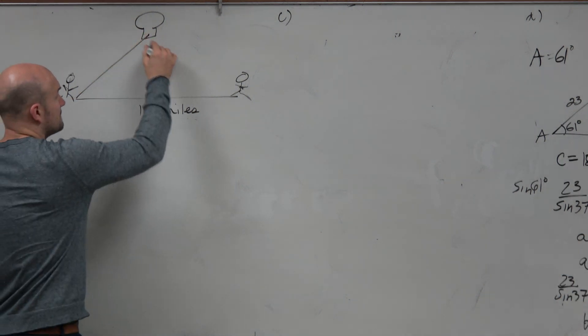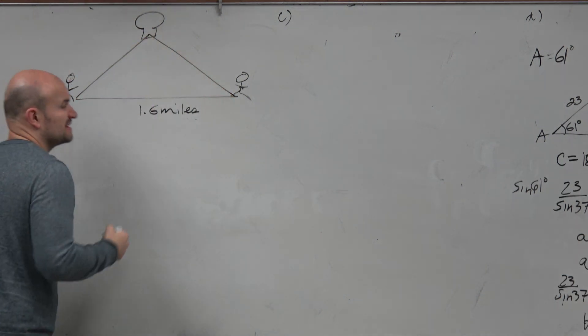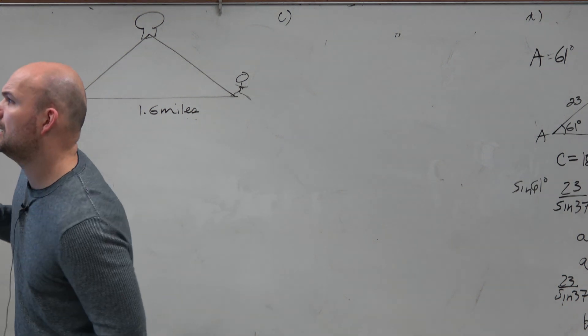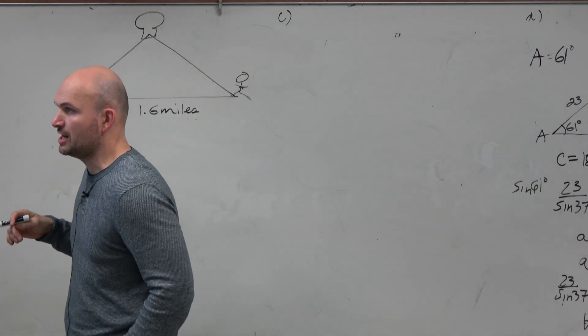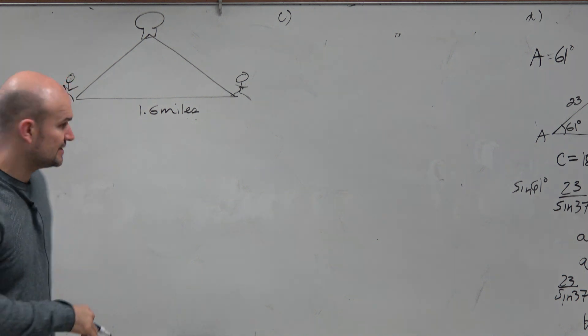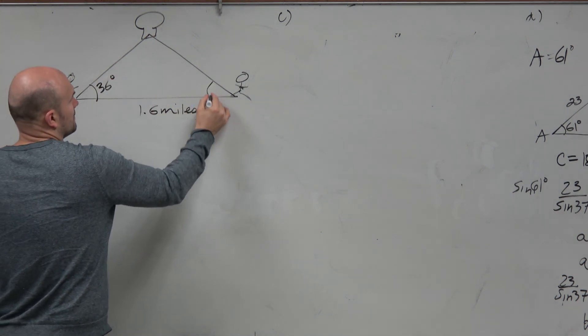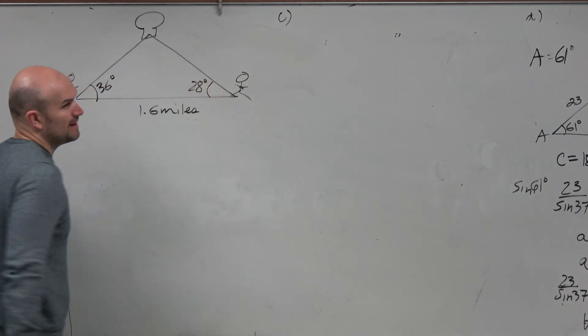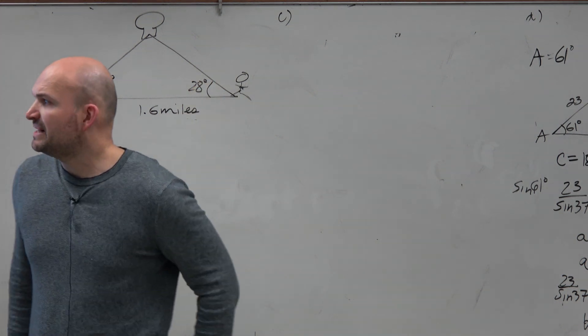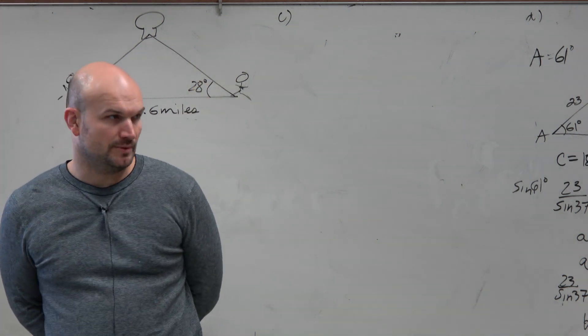So we have an angle here, because it says the angle of elevation from each observer to the hot air balloon is 36 degrees and 28 degrees. And it doesn't tell us which one, so we're just going to pick. But then the question says, find the height of the balloon.